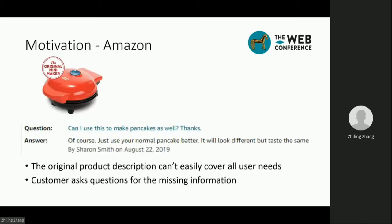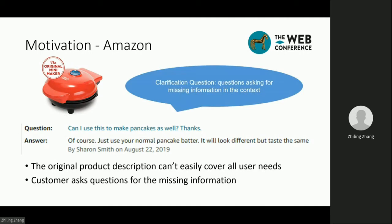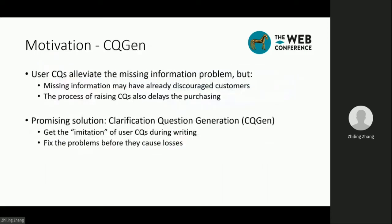In e-commerce websites like Amazon, it is common that the product description can't cover all user needs. Therefore, customers need to ask questions for the missing information. For this kind of question, we refer to them as clarification questions — questions asking for missing information in the context. They are the focus of this work. It can be seen that users' clarification questions can be helpful, as they can alleviate the missing information problem.